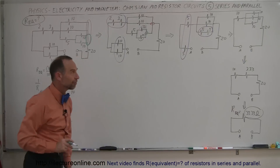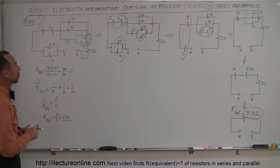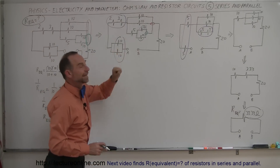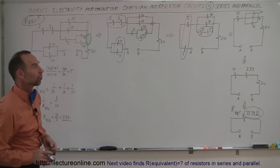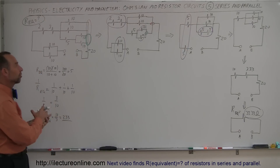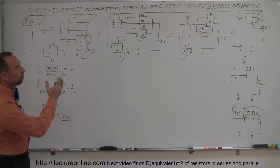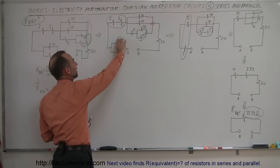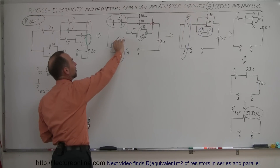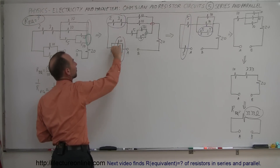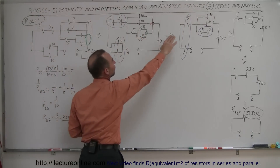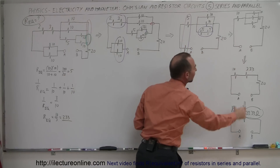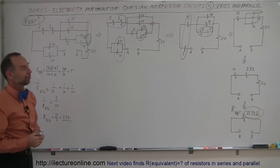If you follow this standard procedure — first redraw the circuit so you can see which resistors are in series and which are in parallel — then just start combining. Any time you find a parallel combination or a series combination, simply combine the two, make it simpler, combine again, and so forth until you have the final answer. That's how you do it.